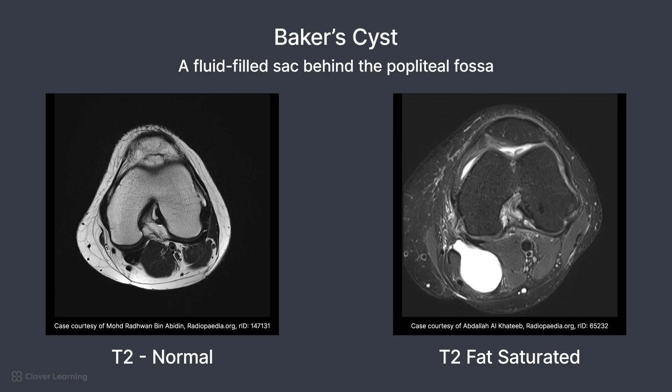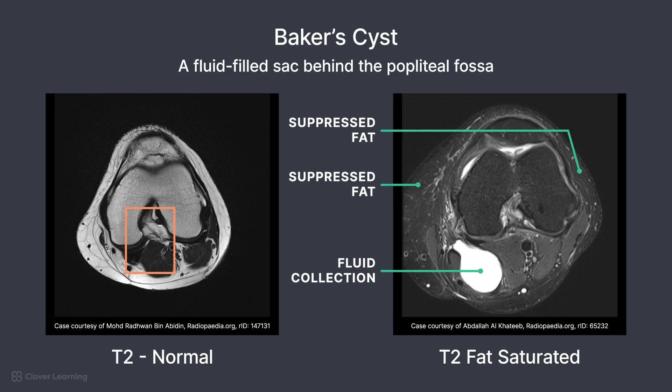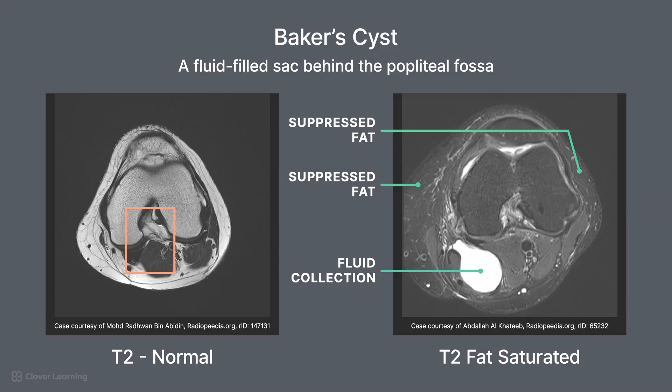On the first T2-weighted image, you can see a normal popliteal fossa with no cystic structure. On the second image, T2 fat-saturated, you can see a Baker cyst with a high-signal fluid collection behind the popliteal fossa and uniform suppression of fat tissue to better demonstrate the bright cyst. This has been an overview of common pathologies of the knee seen in an MRI.